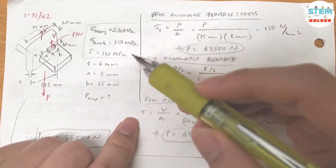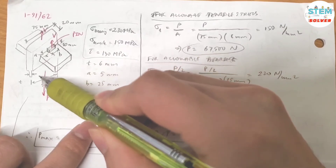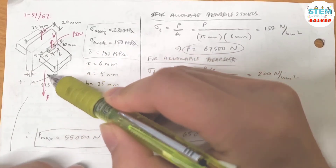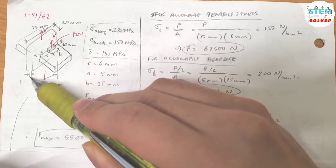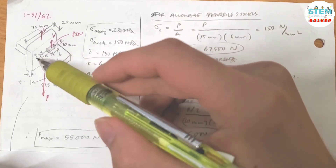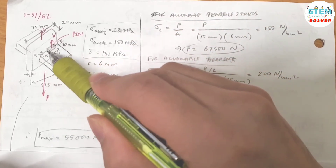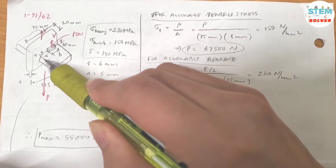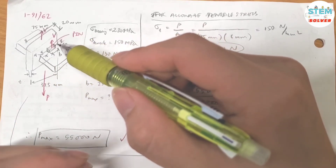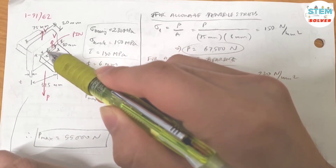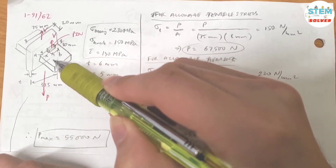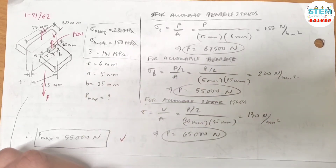Let me explain one more time. Normal tensile stress tends to tear apart this thin section by pulling it down. For the bearing stress, the pin presses and makes a hole in this blade. Refer to the actual figure for better understanding.